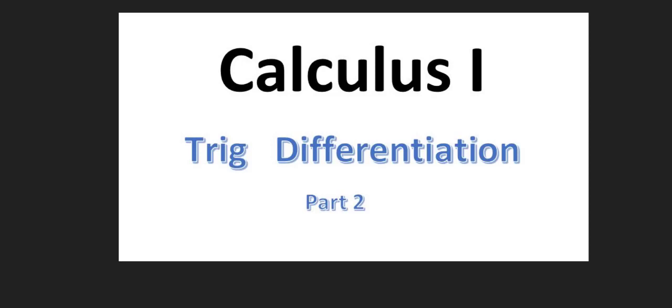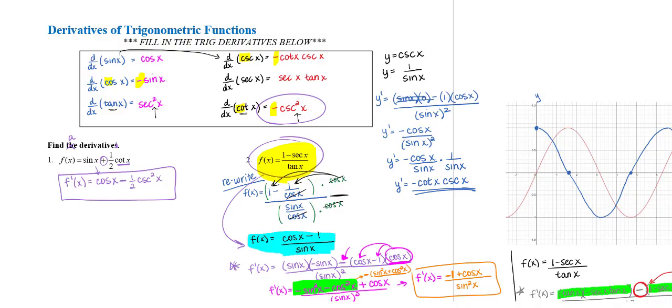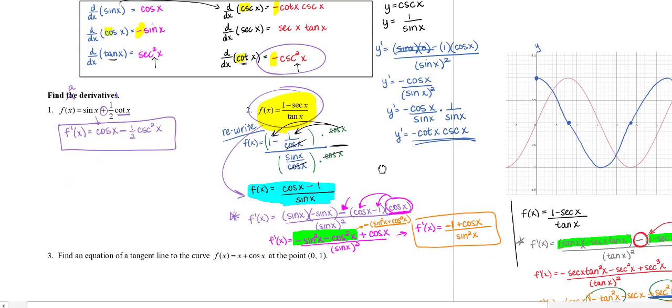Hi and welcome to part two of a trig differentiation video for Calc 1. In the first video we explored the graph of y equals sine x and why the derivative would be cosine of x, filled in all the trig derivatives, and did a few examples using quotient rule.